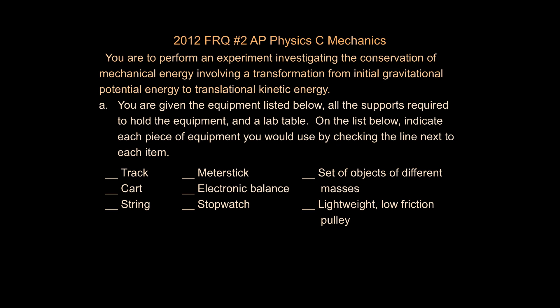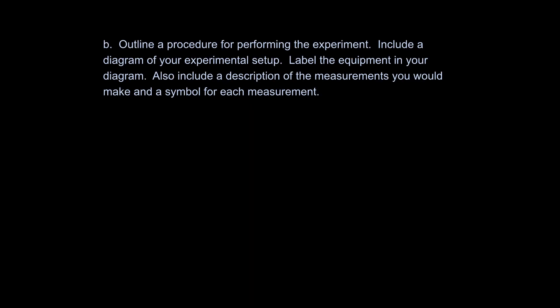It's asking you what pieces of equipment are you going to use. So start thinking about if we're going to do a conservation of energy where you go from gravitational into kinetic energy, how could I set this up as an experiment. It turns out that there are probably going to be two ways that you would set this up. What I would recommend is you should probably check off the meter stick and the stopwatch first and then do your procedure, your diagram, come back and put a check mark by anything else that you come up with later.